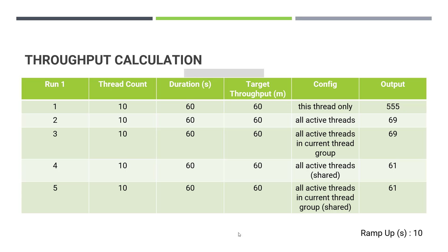In the first run, the configuration is 'This Thread Only'. With this configuration, the throughput will be distributed among all the threads. So here the target throughput is 60 and the thread count is 10, so this throughput of 60 will be distributed among all the threads.